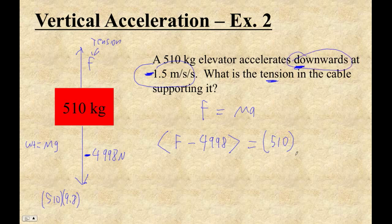Because it's downward. So that's all you have to look out for. So 510 times negative 1.5 is negative 765.